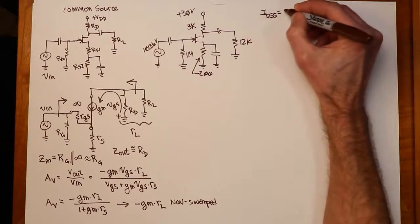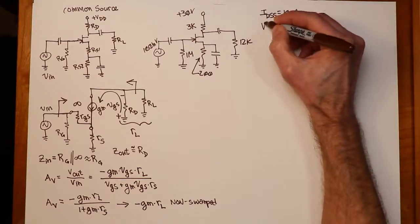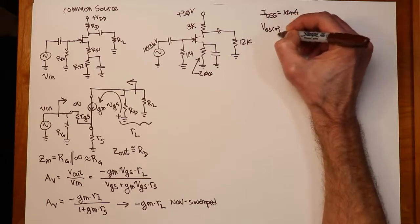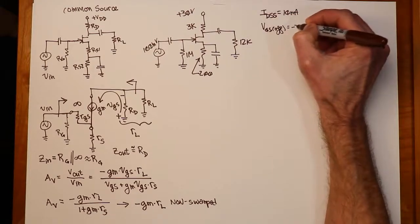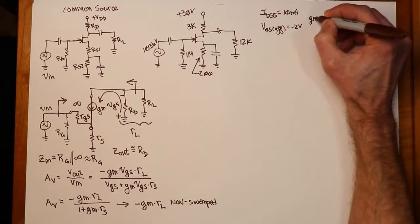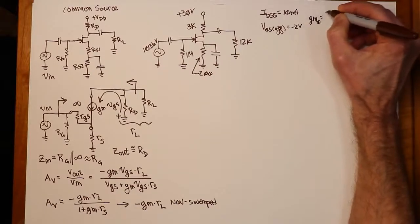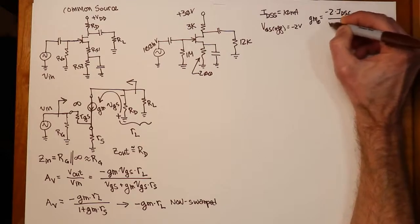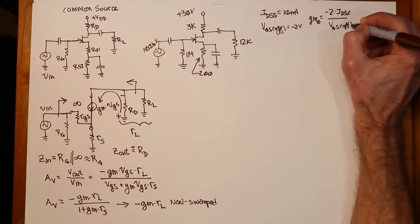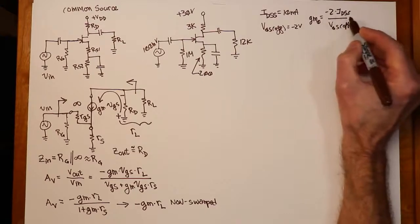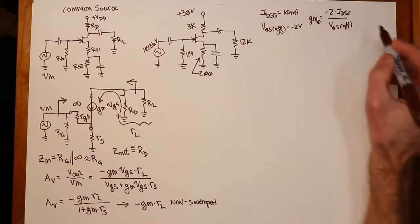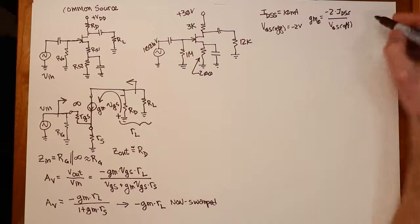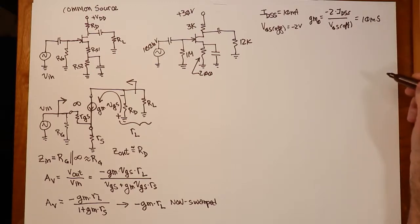I'm going to say the IDSS, the maximum current is 10 mils. The associated VGS off would be minus 2 volts. From that, we can determine GM zero, the maximum transconductance. That's negative 2 IDSS over VGS off. So that's going to be negative 2 times 10 mils, 20 mils over the negative 2 volts. So that's just going to equal 10 millisiemens. Beautiful.